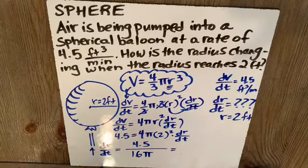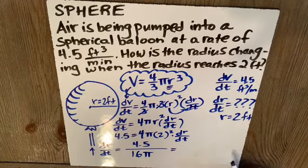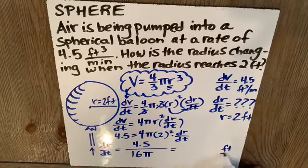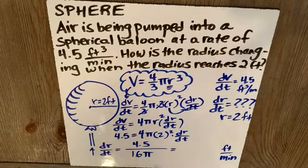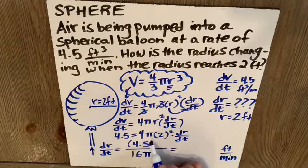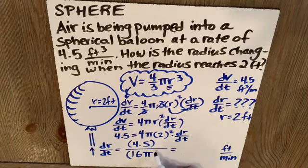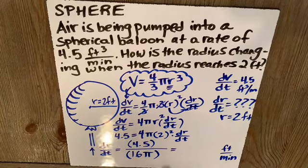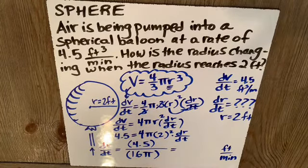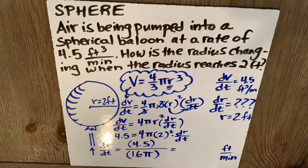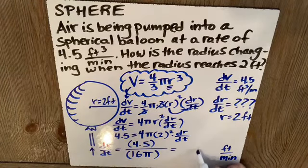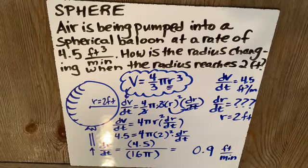And so I know my units dr/dt are going to be feet per minute. And I just want to use my calculator. Now if I'm going to do this, I'm going to say 4.5 divided by parentheses 16 pi, particularly in the denominator. If you don't use these parentheses, you'll get the answer wrong. So it turns out dr/dt is about 0.09 feet per minute.